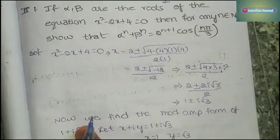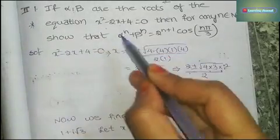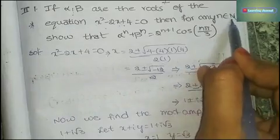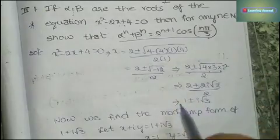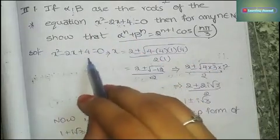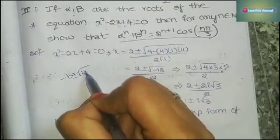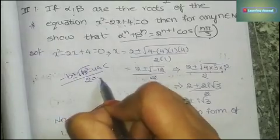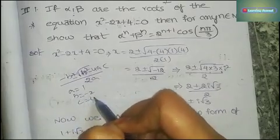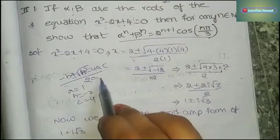Second Roman first problem is very important for examination. If α and β are the roots of x² − 2x + 4 = 0, and n belongs to natural numbers, show that α^n + β^n = 2^(n+1) cos(nπ/3). First, find the roots using the quadratic formula: −b ± √(b²−4ac) / 2a, where a=1, b=−2, c=4.